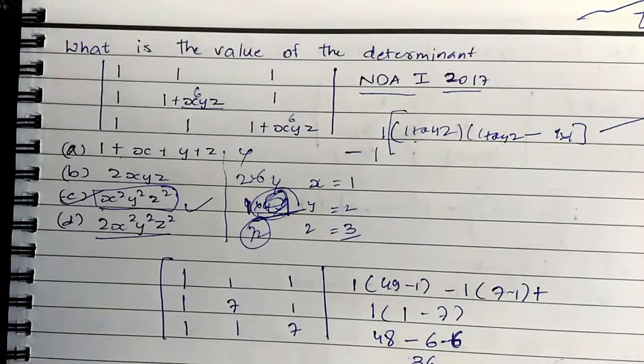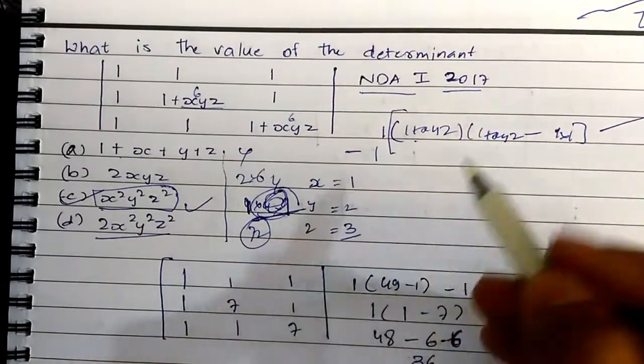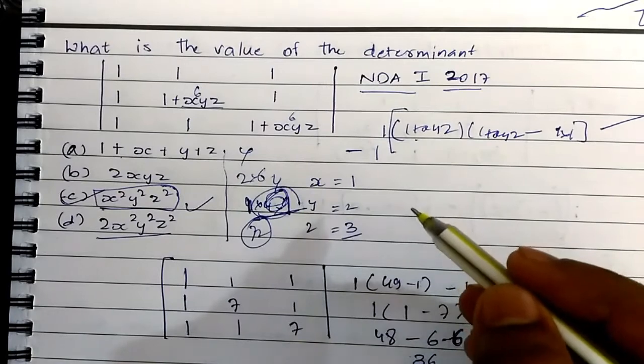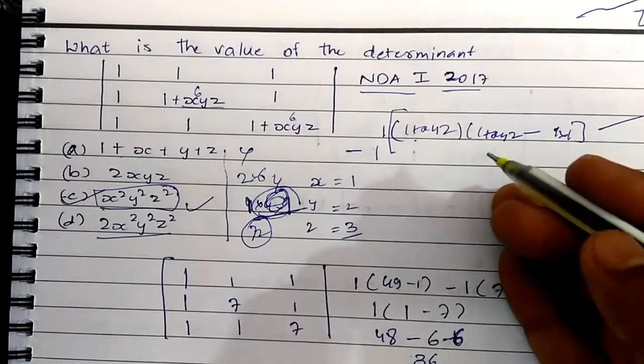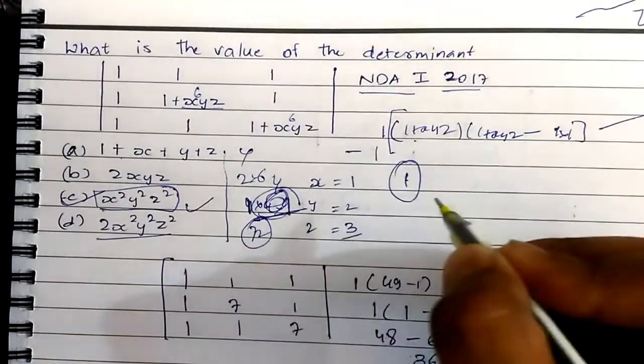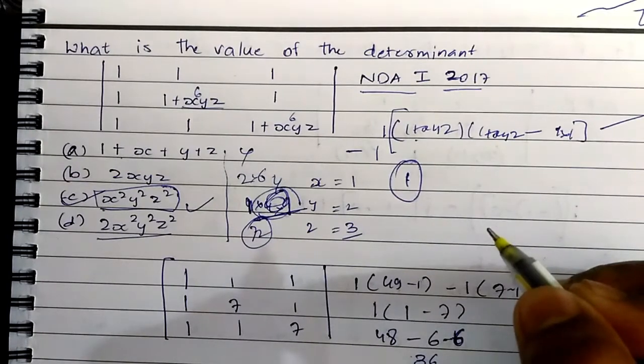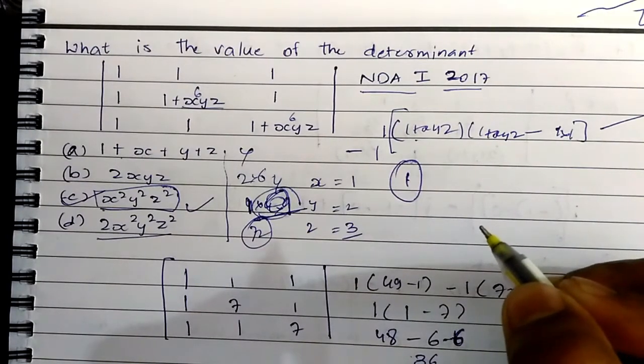So the answer is x²y²z². I thought of starting such video series where questions I'll find interesting, I'll just make a video on that and you can see it. So this is the first video for NDA maths tips and tricks. Thanks for watching, keep watching.